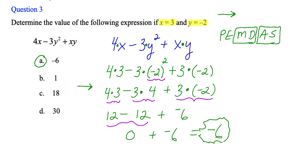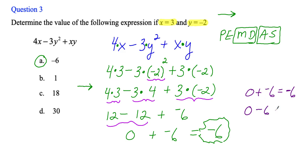A quick refresher on 0 plus negative 6: whenever you add a negative, think of moving left on the number line. Starting at 0, move left 6 — you end up at negative 6. Another way: adding negative is the same as subtracting, so 0 minus 6. Think of temperature: it's 0 degrees, it goes down 6 degrees, the new temperature is 6 below zero — negative 6. Don't confuse this with multiplication: 0 times negative 6 is 0.